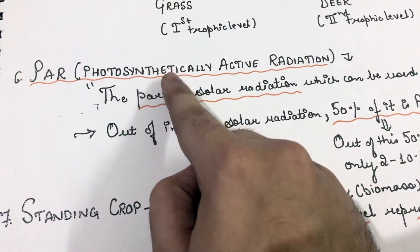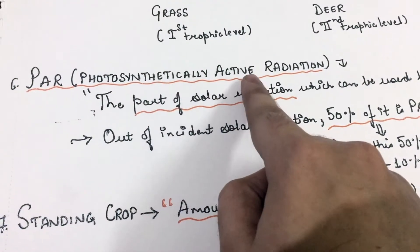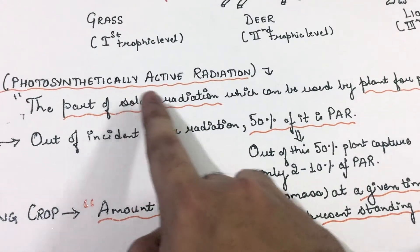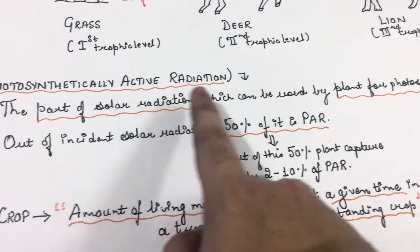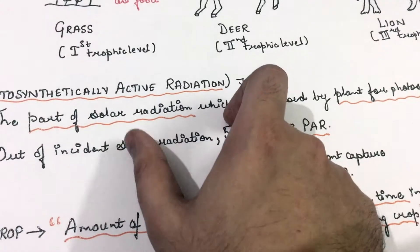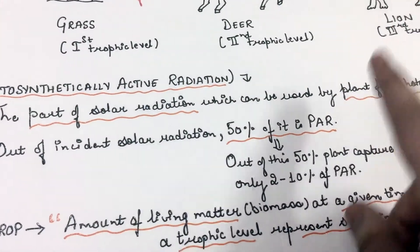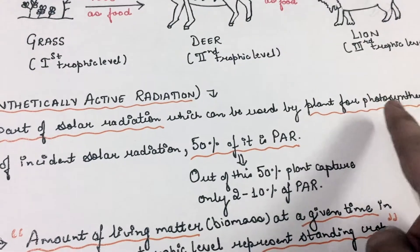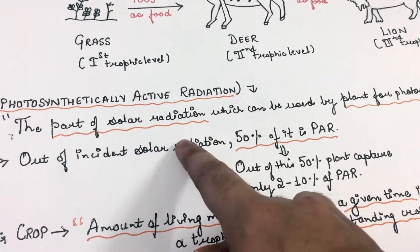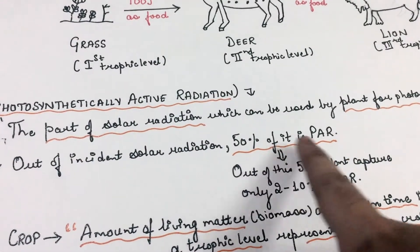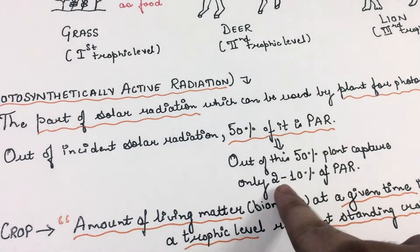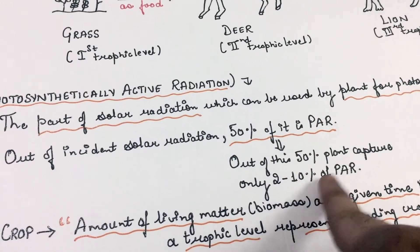Now let us look at photosynthetically active radiation, or PAR. PAR is the part of solar radiation which can be used by plants for photosynthesis. Out of total incident solar radiation, 50% is PAR, and out of this 50%, plants consume only 2 to 10% of PAR.